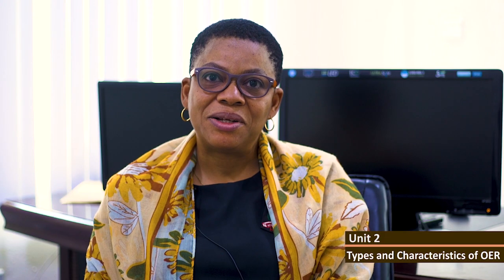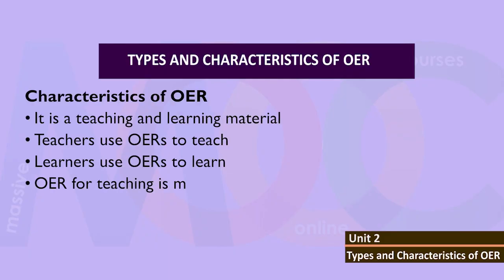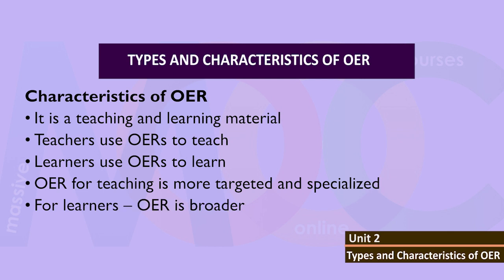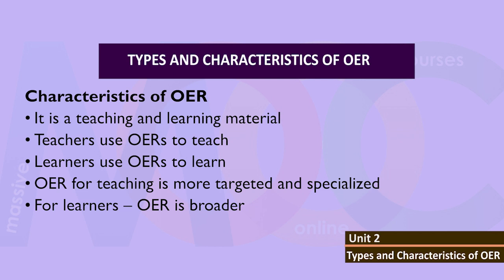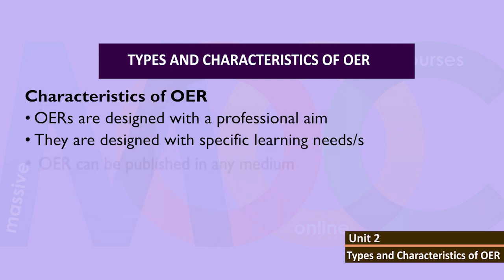What then are the characteristics of open educational resources? OERs are basically teaching and learning materials. Teachers use open educational resources to teach while learners use OERs to learn. OER for teaching is more targeted and specialized. For learners, it is broader. For teaching, OERs are designed with a professional aim and with specific learning needs.